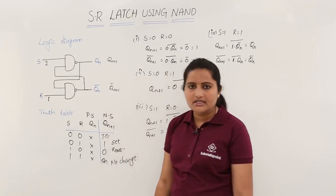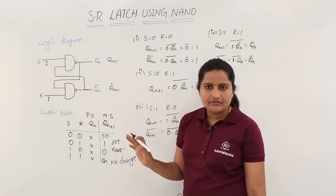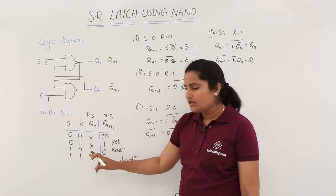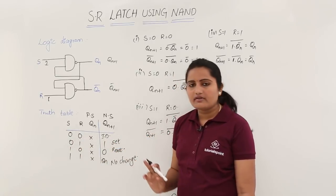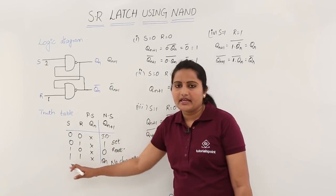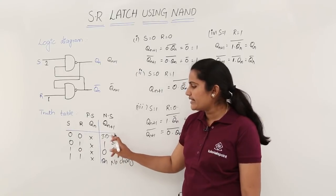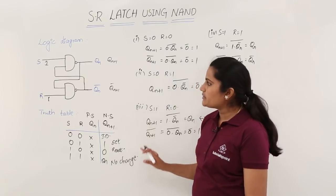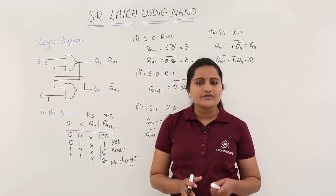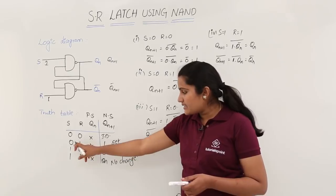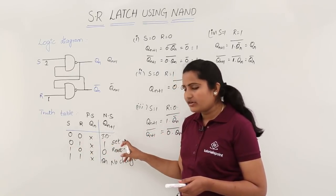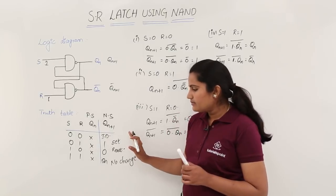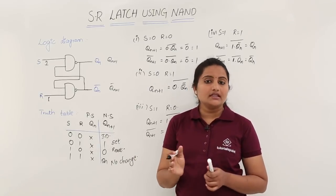The meaning of this truth table is: for SR latch with NAND gates, to reset use the 1 0 condition; for set use the 0 1 condition; for no-change use the 1 1 condition; and the 0 0 state is not used because we get indeterminate output. You can observe that in the NOR gates case, conditions are different — in 0 1 condition you get reset. This is SR latch with NAND gates.